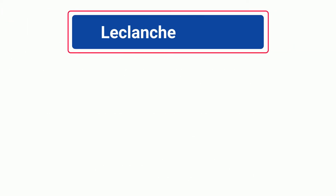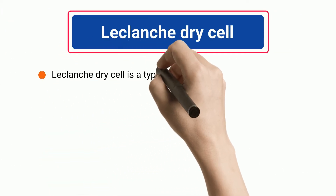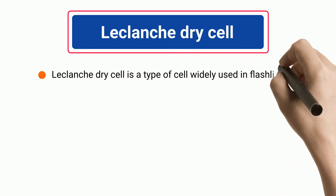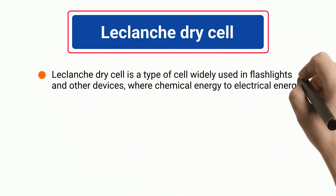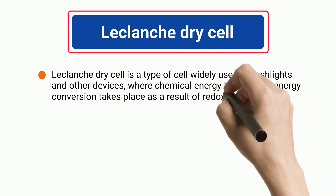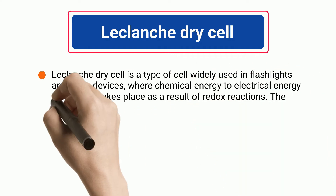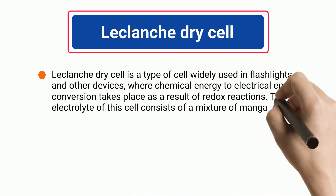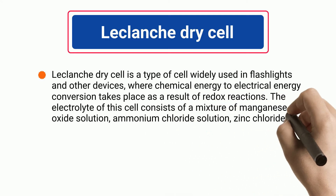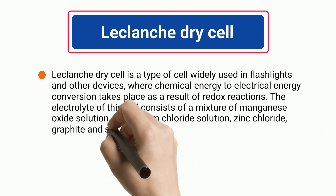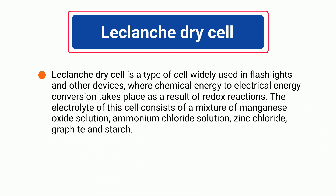Leclanche Dry Cell is a type of cell widely used in flashlights and other devices where chemical energy to electrical energy conversion takes place as a result of redox reactions. The electrolyte of this cell consists of a mixture of manganese oxide solution, ammonium chloride solution, zinc chloride, graphite, and starch.